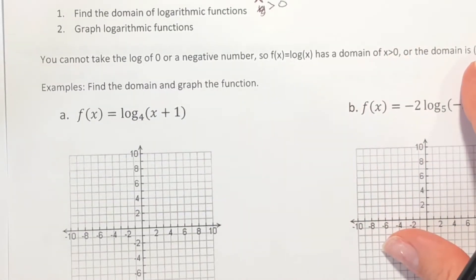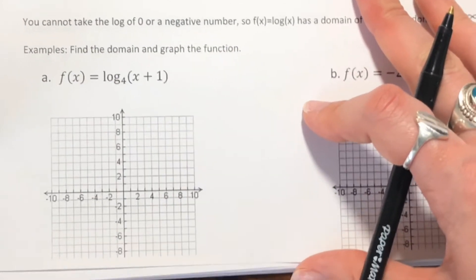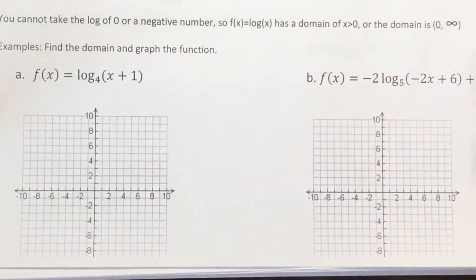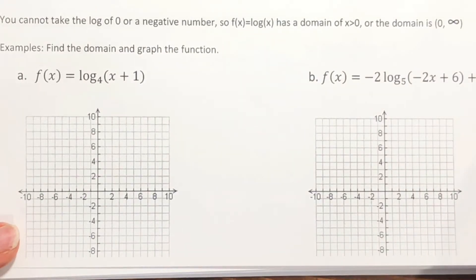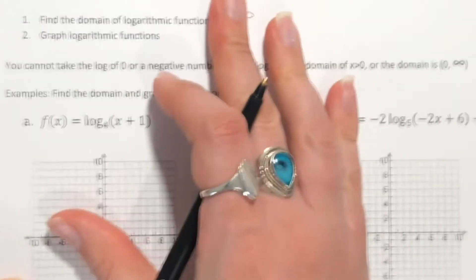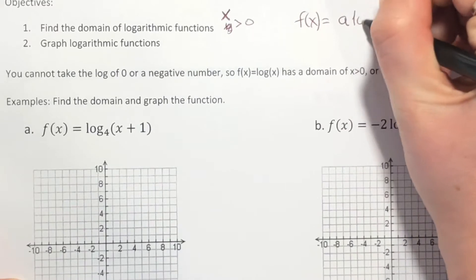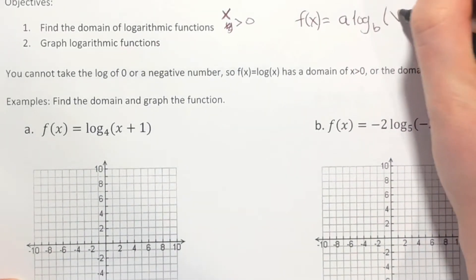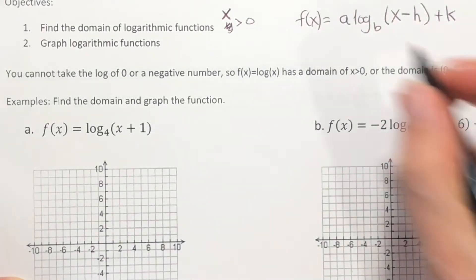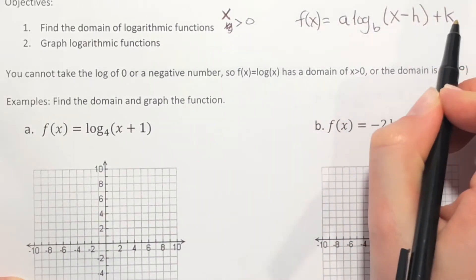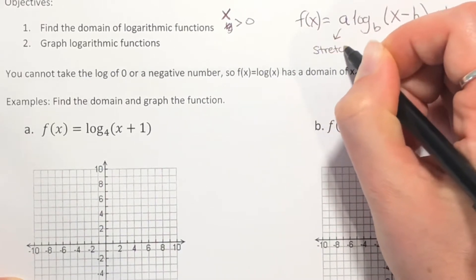x needs to be greater than zero, or you can think of it as going from zero to infinity. Just like any of our other functions, you can shift them, reflect them, and stretch them. The general format is f(x) = a·log_b(x − h) + k. We've used a, h, and k in past types of equations. The a in the front is going to be your vertical stretch — making it either skinnier or wider.